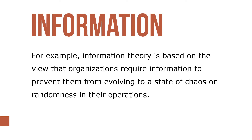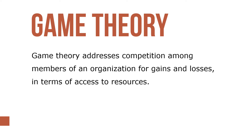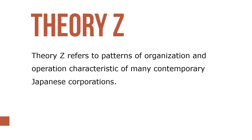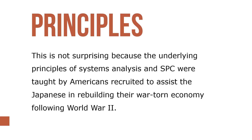Information theory is based on the view that organizations require information to prevent them from evolving to a state of chaos or randomness in their operation. Game theory addresses competition among members of an organization for gains or losses in terms of access to resources. Theory Z refers to patterns of organization and operation characteristic of many contemporary Japanese corporations. Total Quality Management (TQM) is a management system based on statistical process control techniques, aimed at satisfying customer expectations by continuously working across an organization to improve processes.